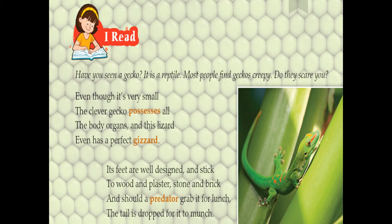Even though it's very small, the clever gecko possesses all the body organs. What does 'possesses' mean? It means to have a particular quality or ability. So here, the gecko is very clever to catch the insects for its eating. This lizard even has a perfect gizzard. What does 'gizzard' mean? It means the part of a bird's stomach in which food is changed into smaller pieces before it can be digested.